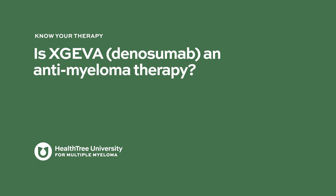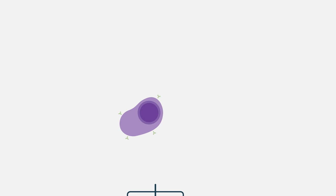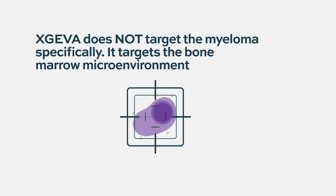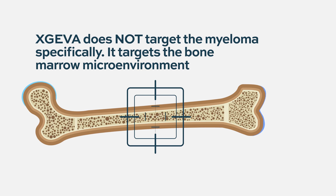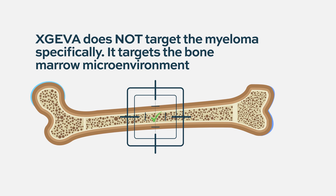Is Xgeva, Denosumab, an anti-myeloma therapy? Denosumab is not a myeloma-targeting therapy, but it targets some of the cells that are very important for treating the myeloma. It is very possible that it also helps to combat myeloma, but it is not targeting the myeloma specifically — it targets the cells and the microenvironment of the myeloma.